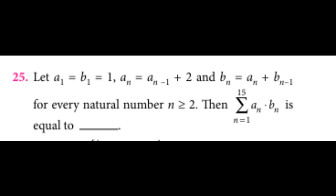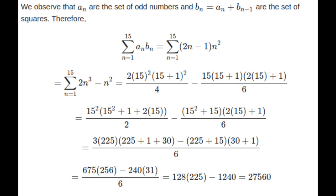The solution proceeds as follows. We observe that aₙ are the set of odd numbers because we start with 1 and add 2 at each subsequent step, so there's an increment of 2.